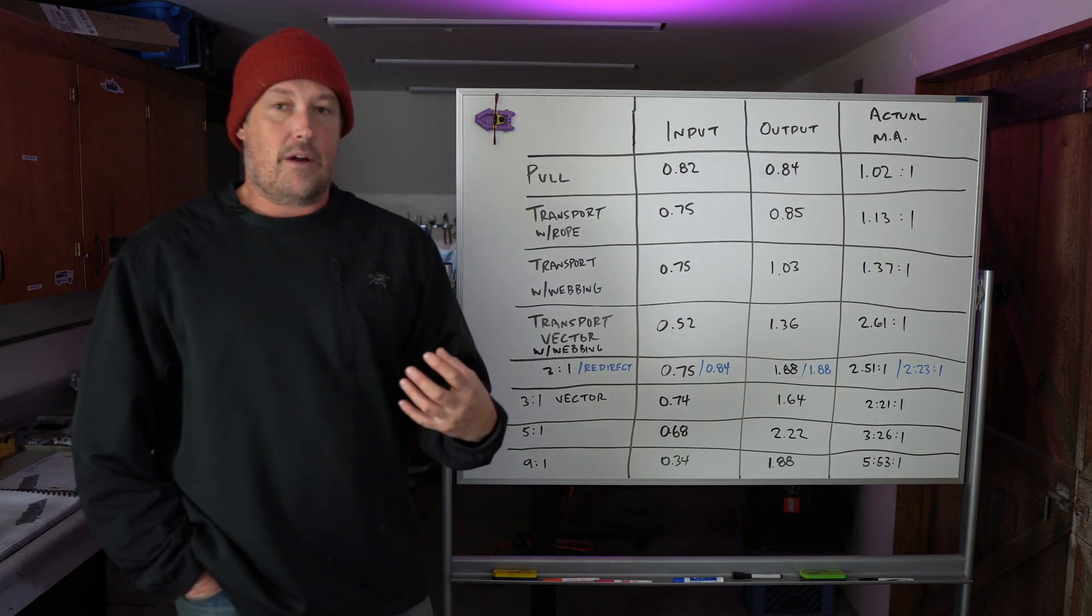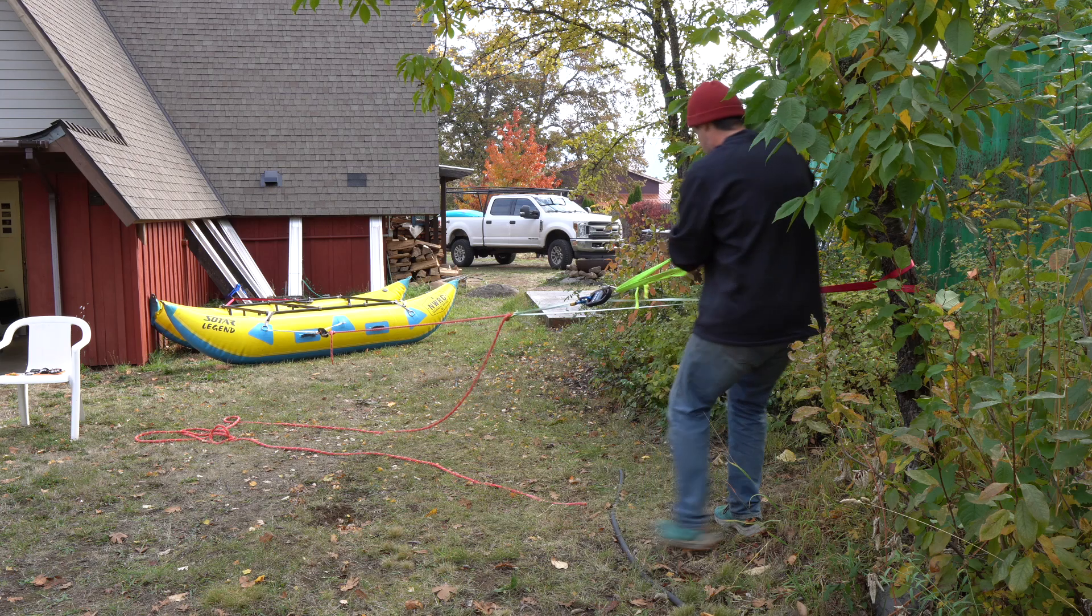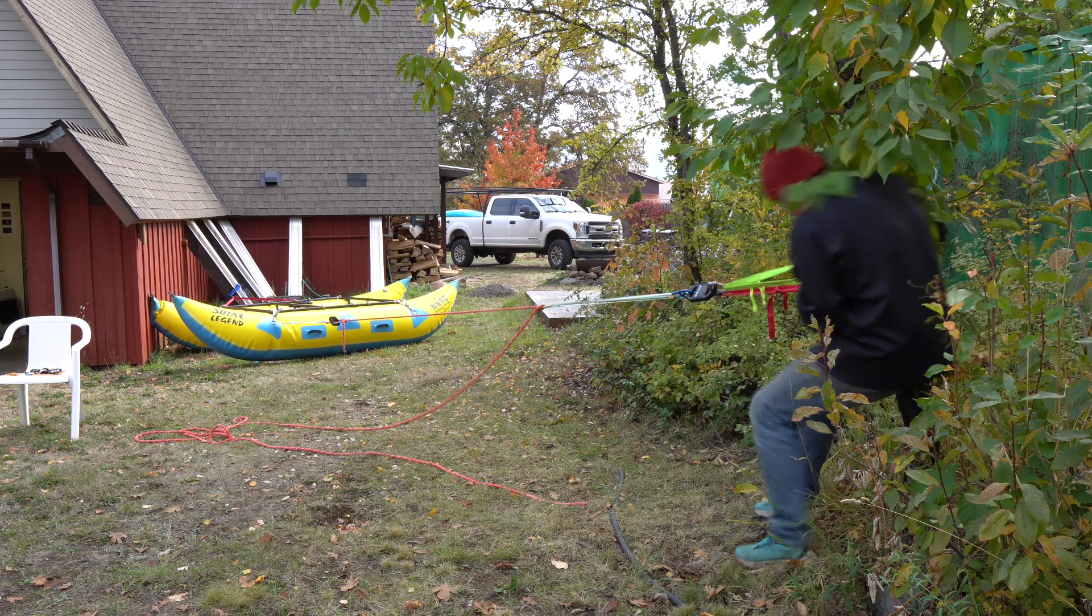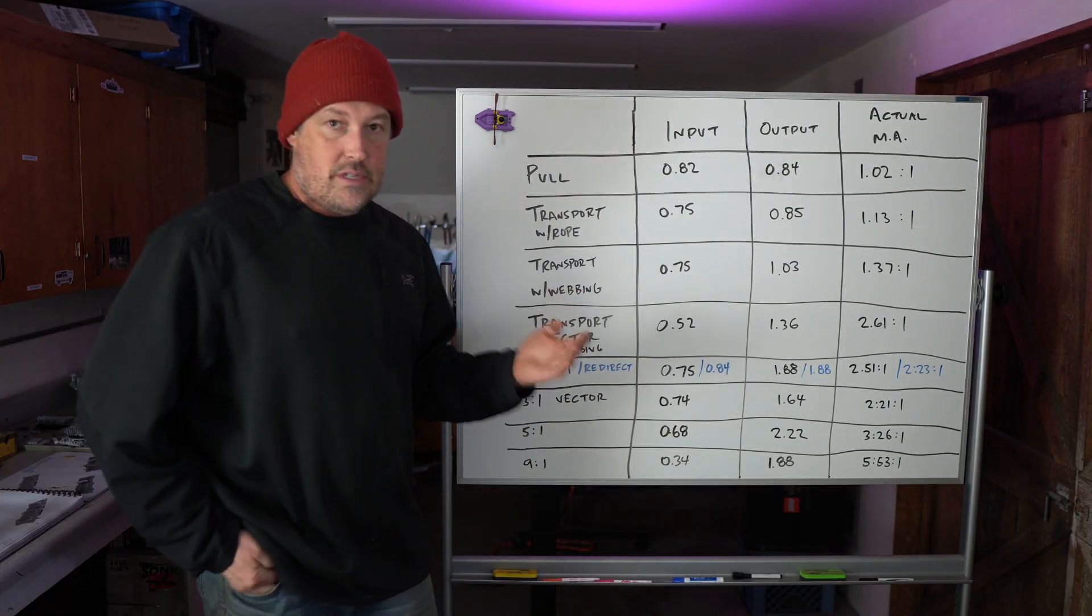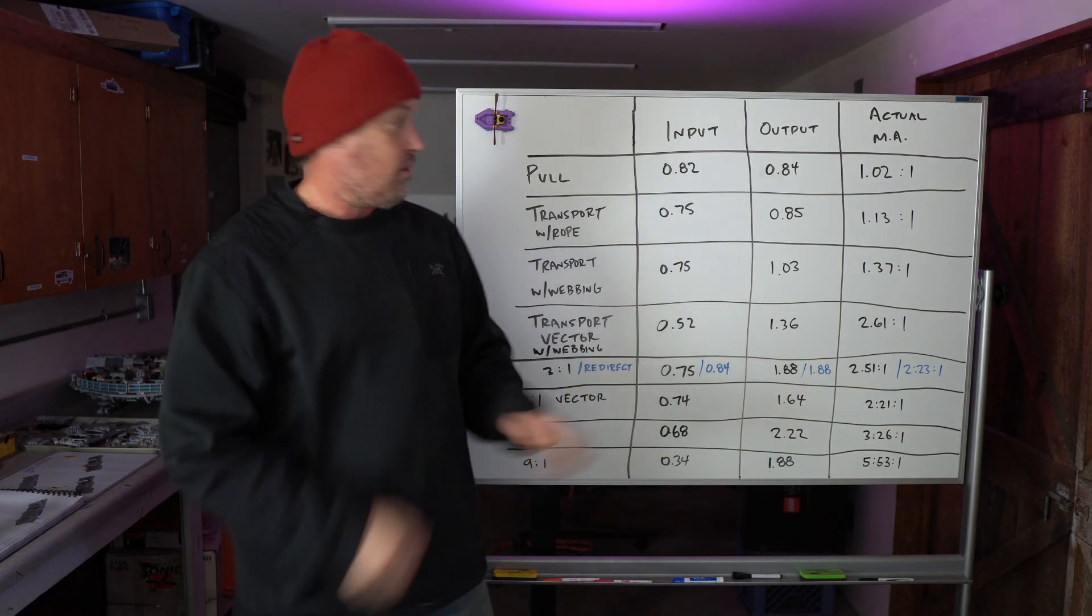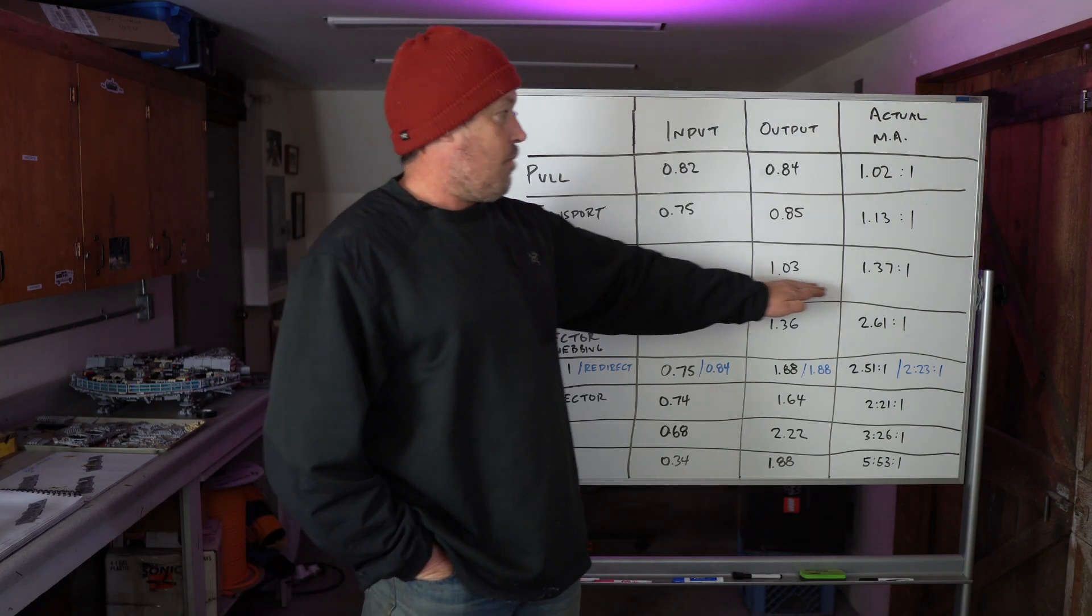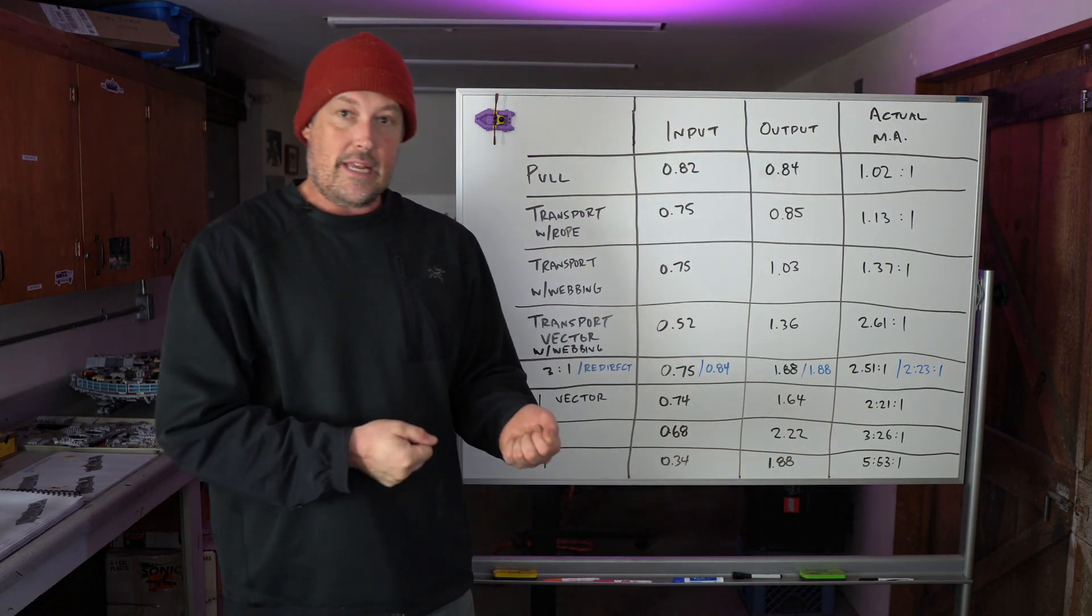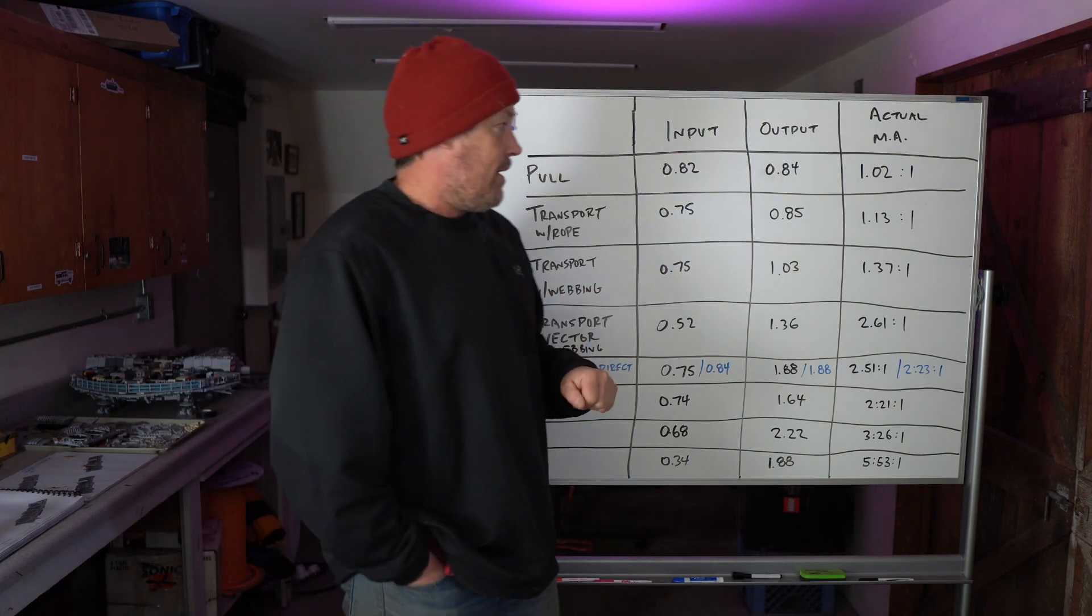Next is something I'm excited about. I'm excited about taking the rope out of the system and doing a piggyback system with one of the fancy high molecular weight polyethylene pieces of webbing because those slide over carabiners better. This webbing reduces the friction. And so I got the same input, the input is just me pulling, and so luckily I got the same input just to compare them. And I got a little bit more output. I got 1.37 to 1. So using a little less friction in that webbing over the carabiners as compared to the rope, I did a little bit better with the transport hitch.